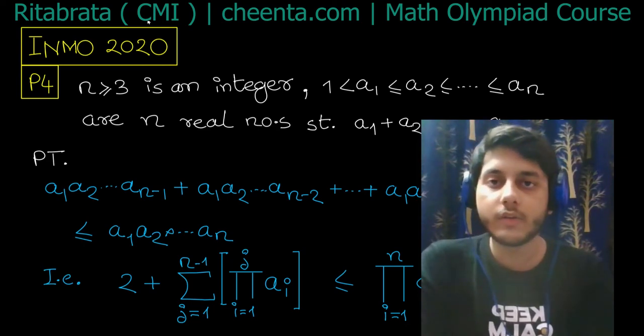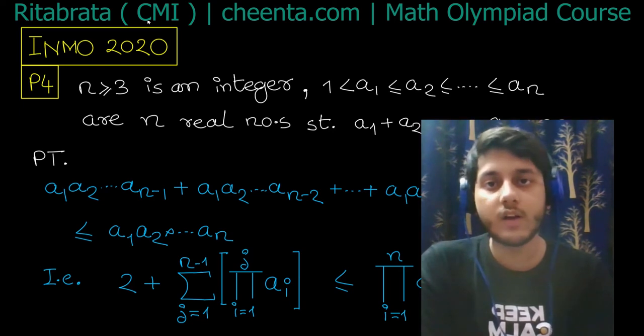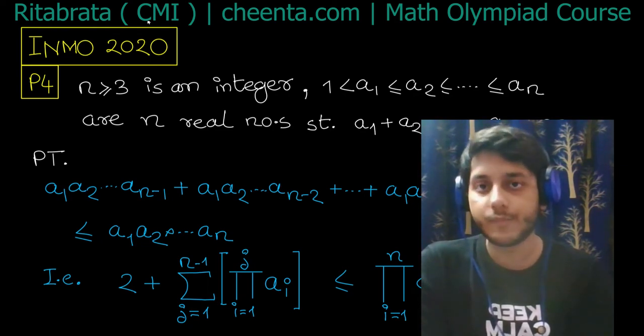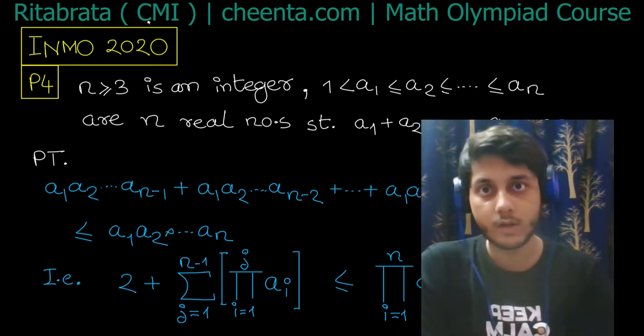Today I want to discuss an inequality problem that appeared in INMO 2020. This is a nice example of application of Chebyshev's inequality. Whenever in inequality problems I have multiple variables and variables are ordered, Chebyshev's inequality is really useful. This will give a general idea of how to solve these types of inequalities using Chebyshev's inequality.